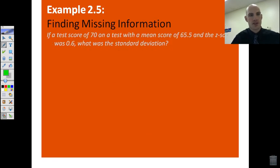Here's an example for you to do. If a test score was 70 on a test with a mean of 65.5, the z-score was 0.6. What was the standard deviation? You go ahead and try that one. Figure that out, and we'll talk about it in class tomorrow. Alright guys, that's z-score. We'll see you next time.